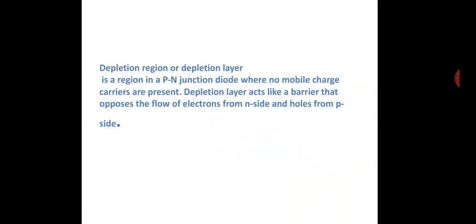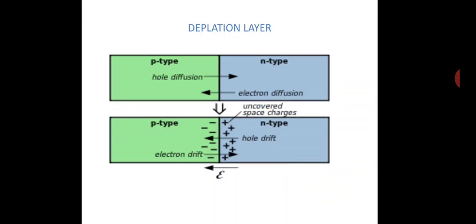What is a depletion layer? The depletion layer is a region in a P-N junction diode where no mobile charge carriers are present. The depletion layer acts like a barrier, like an insulator, which opposes the flow of electrons and holes across the junction.